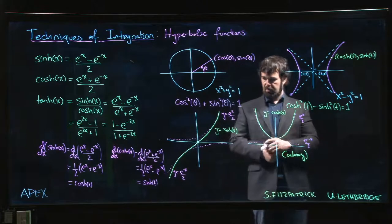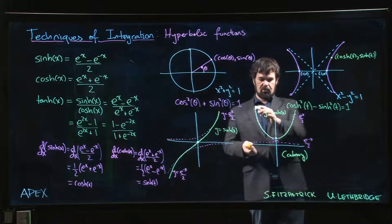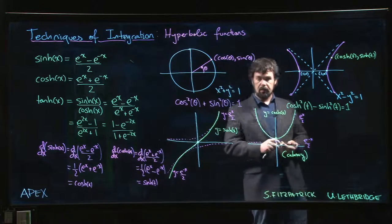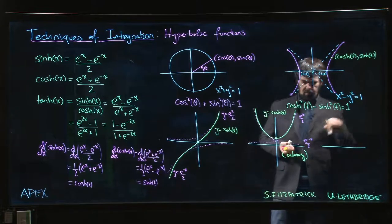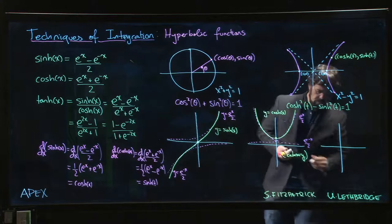And actually, there have been people in the past who, because of that property of this curve, tried to make pendulum clocks where the pendulum tried to follow a catenary curve rather than a typical sort of circular arc like it normally does.